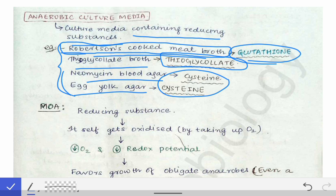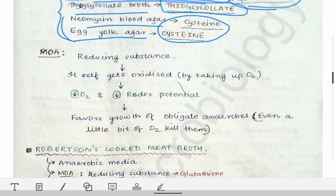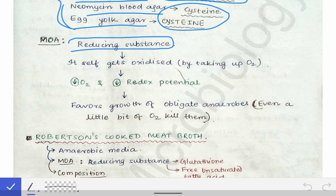Now coming to the mechanism of action of these anaerobic culture media as a whole. These media contain reducing substances — different types such as glutathione, unsaturated fatty acids, thioglycolate, cysteine, and vitamin C, also called ascorbic acid. From our knowledge of chemistry, we know that reducing substances, when they reduce other substances, themselves get oxidized. So here, when these reducing substances get oxidized, they take up the O2 dissolved in the media, thereby removing oxygen from the media.